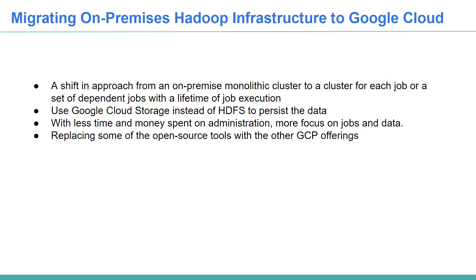It is recommended to use Google Cloud Storage instead of HDFS to persist data. Running HDFS on Dataproc to store data is more expensive than using Google Cloud Storage. Similarly, in AWS, it's better to use S3 instead of EMR-provided HDFS. With less time and money spent on administration, you can focus more on your jobs and data — your data is stored in one place, compute is elsewhere, and cluster management is handled by GCP.